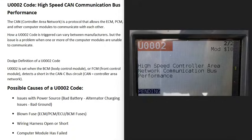Today I'll talk about a U0002 code, what it is and how you go about fixing it. A U0002 code is a high-speed CAN communication bus performance code.